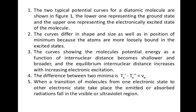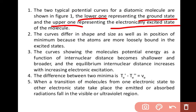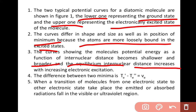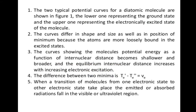The two typical potential energy curves for a diatomic molecule are shown in the figure — the lower one representing the ground state and the upper one representing the electronically excited state of the molecule. The curves differ in shape, size, and in the position of the minimum. Because the atoms are loosely bound in the excited state, the curve showing the molecule's potential energy as a function of internuclear distance becomes shallower and broader, and the equilibrium internuclear distance increases with increasing electronic excitation.